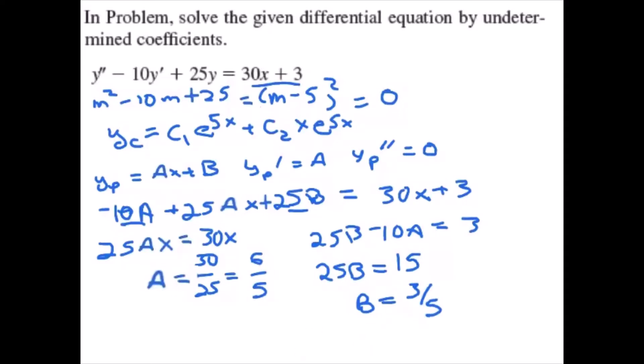Taking those together, I'm just going to clear some space. We get y equals c1 e to the 5x plus c2 e to the 5x plus a, which is 6 fifths x, plus b, which was 3 fifths.